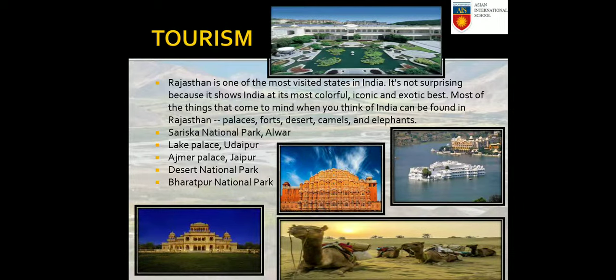Rajasthan is one of the most visited states of India, showcasing the country at its most colorful, iconic, and exotic. It offers palaces, forts, desert, camel and elephant experiences. Tourist spots include Sariska National Park (Alwar), Lake Palace (Udaipur), Ajmer, Jaipur, Desert National Park, and Bharatpur National Park, attracting thousands of tourists throughout the year.